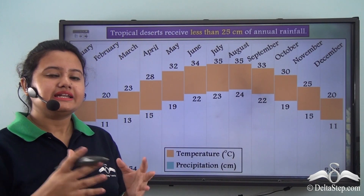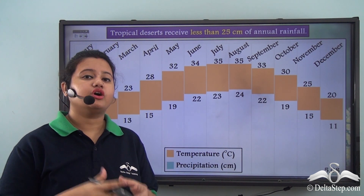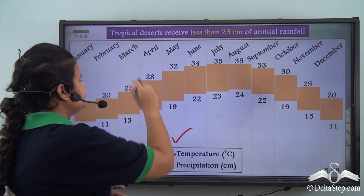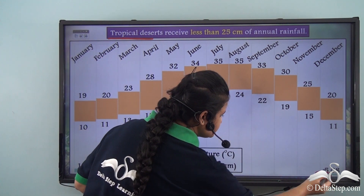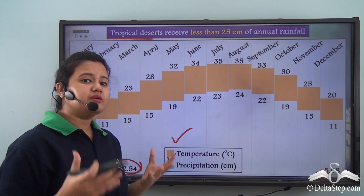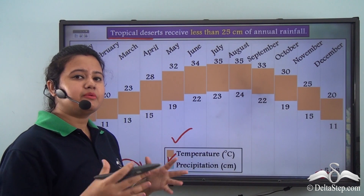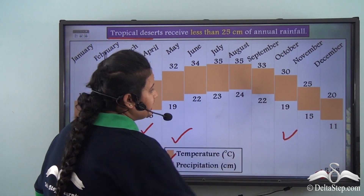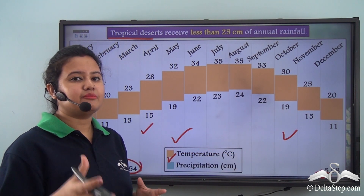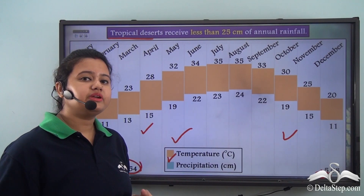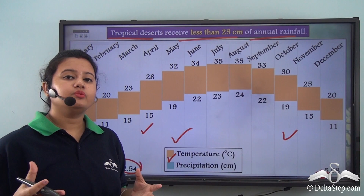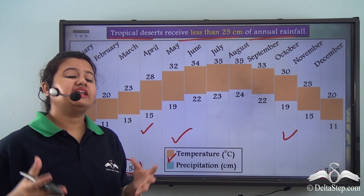Deserts experience less rainfall throughout the year. This chart illustrates the temperature and precipitation conditions of a place in tropical deserts. The blue bars denote the amount of precipitation received. We can see that precipitation is very less throughout the year. For the maximum part of the year — from April to November — there is actually no rainfall. From December to March, there is only a very little amount of rainfall. In fact, the annual rainfall is less than 25 centimeters. So tropical deserts experience very less precipitation.